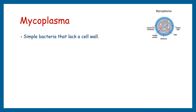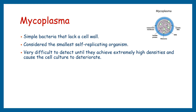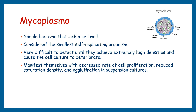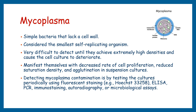Mycoplasma are simple bacteria that lack a cell wall and are considered the smallest self-replicating organisms. Due to their extremely small size, mycoplasma are very difficult to detect. They show no visible signs of infection until they achieve extremely high densities and affect the cell culture badly. Some slow-growing mycoplasma may persist in culture without causing cell death, but they can alter the behavior and metabolism of the host cell. Chronic mycoplasma infections might manifest as decreased rate of cell proliferation, reduced saturation density, and agglutination in suspension cultures. The only assured way of detecting mycoplasma contamination is by testing cultures periodically using fluorescent staining, ELISA, PCR, immunostaining, autoradiography, or microbiological assays.